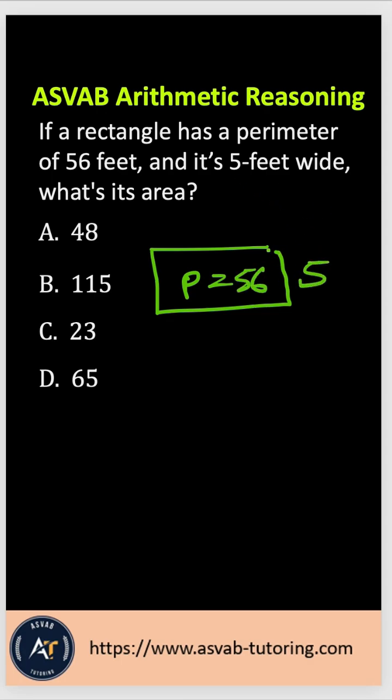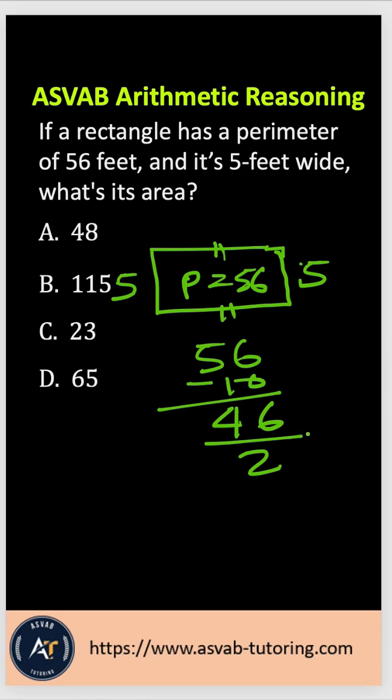A rectangle is a four-sided shape where opposite sides are the same. So if this side is 5, this side is also 5. 5 plus 5 is 10, so 56 minus 10 gives you 46. This side and that side together is 46. If you divide that by 2, that gives you 23.